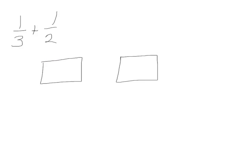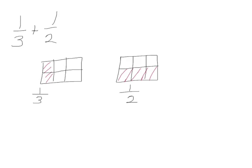Here we're going to use our rectangular fraction models to add one-third plus one-half. Our first rectangle will divide into thirds vertically. Our second will divide into halves horizontally. We have one-third and we have one-half. In order to get a common unit we divide our rectangle that was in thirds in half horizontally, and divide our rectangle that was in half into thirds vertically. Now we have six equal parts in each rectangle.